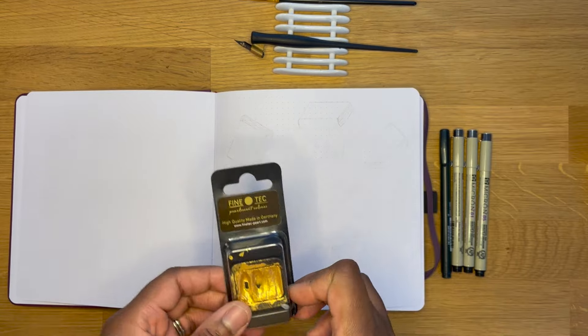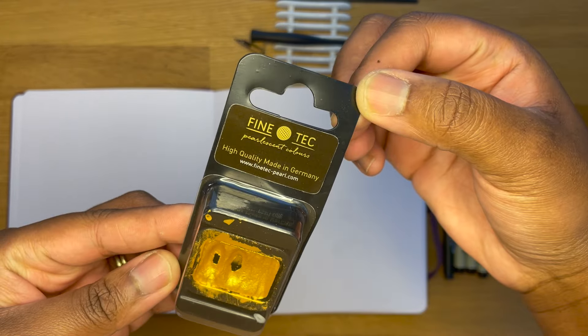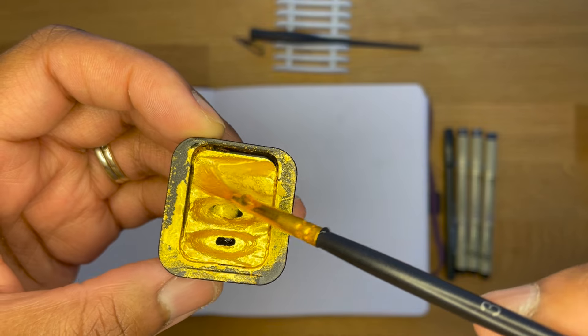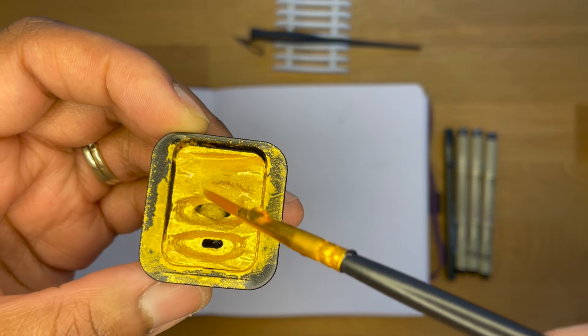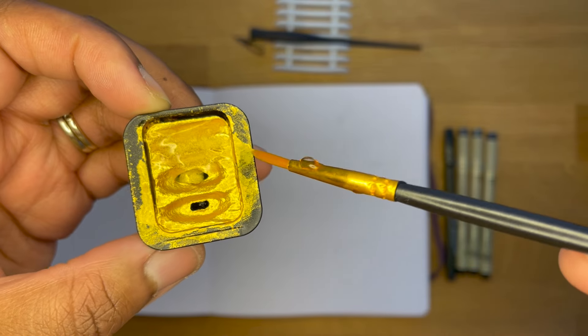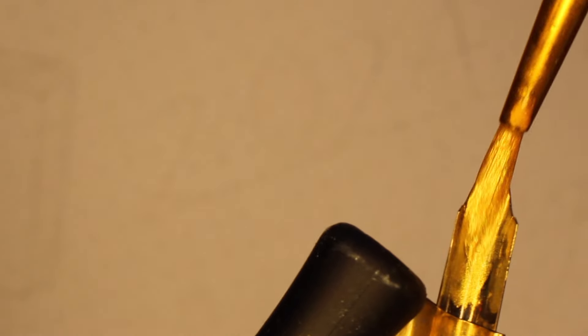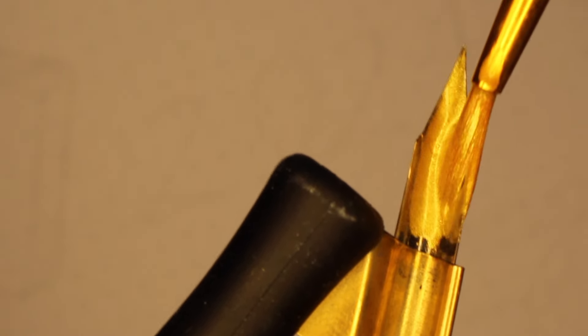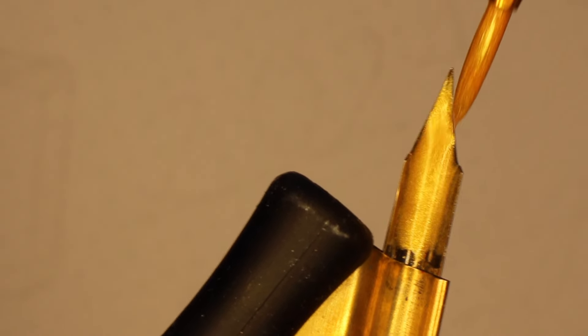The design for today is going to be a little bit more on the minimal side because I had this idea that the more I read, the more colorful and filled in the pages are going to be. So starting out, we're just going to do the title page that says 2024 reading journal. I'm going to be using my go-to Finetec pearlescent color in Olympic gold along with my Hunt 101 nib to letter the title.